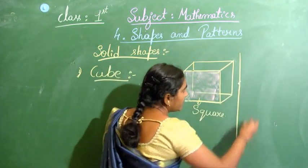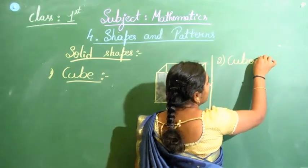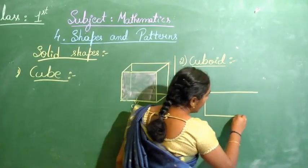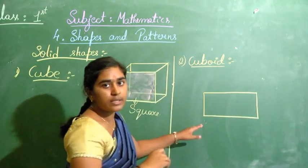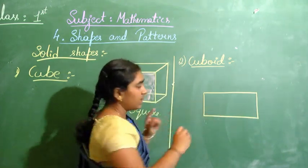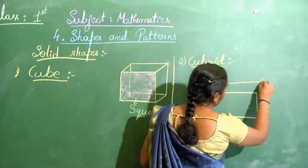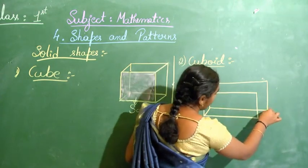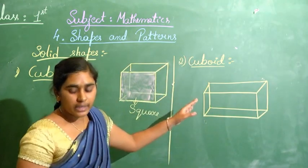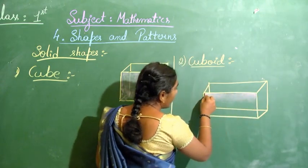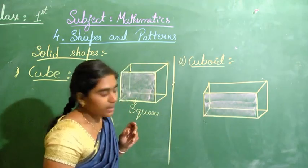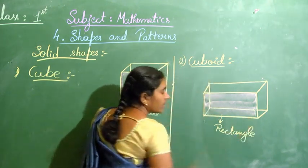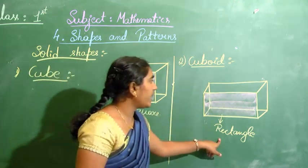The next solid shape is a cuboid. A cuboid comes from a rectangle. A rectangle has two long sides and two short sides. I will stretch the rectangle and join one more rectangle — we will get a cuboid. One face of a cuboid will be a rectangle.